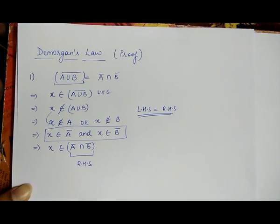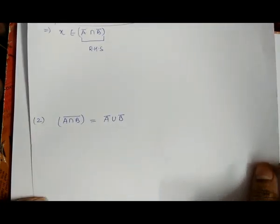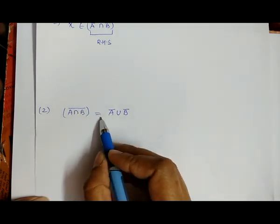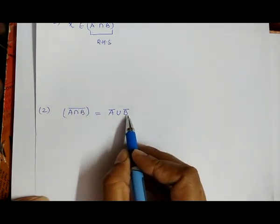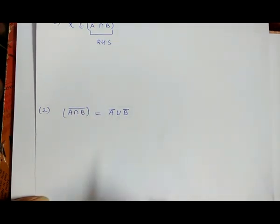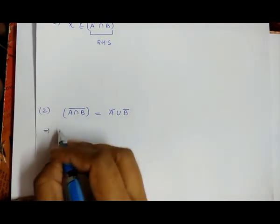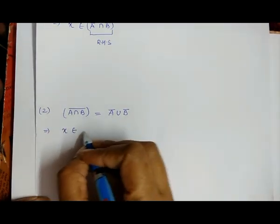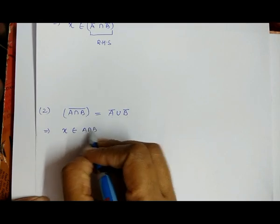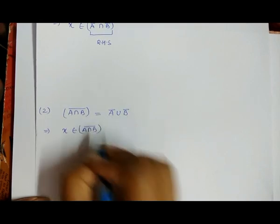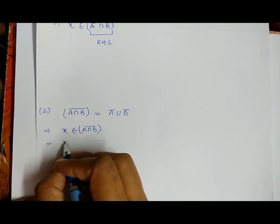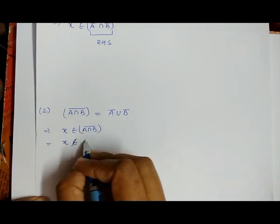In a similar manner, we now prove the second de Morgan's law: A intersection B whole complement equals A's complement union B's complement. We take an element X which belongs to A intersection B whole complement, and remove the complement to rewrite it as X is not belongs to A intersection B.